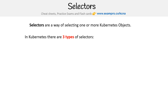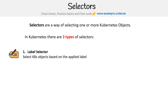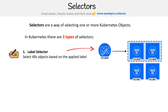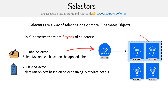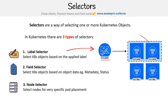In Kubernetes, there are three types of selectors. We have label selectors, which select Kubernetes objects based on the applied label — this is the type of selector we're going to heavily focus on in this course. The idea is that you have a selector matching all pods with the key 'environment' and the value 'production', selecting only those pods. We also have field selectors, which select Kubernetes objects based on object data like metadata or status, and node selectors to select nodes for very specific pod placement.